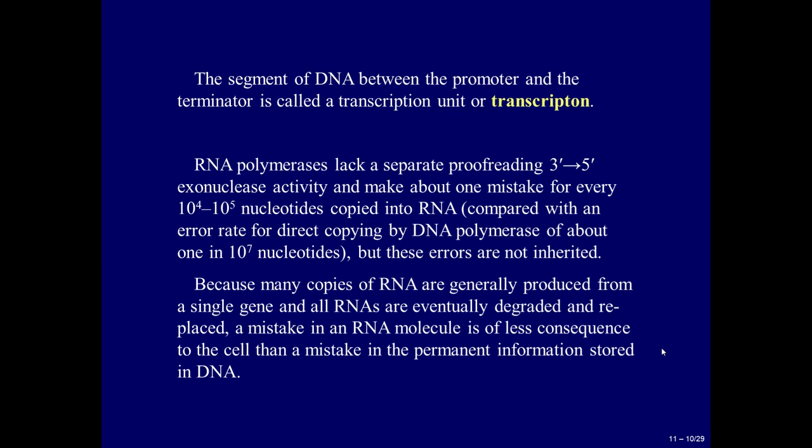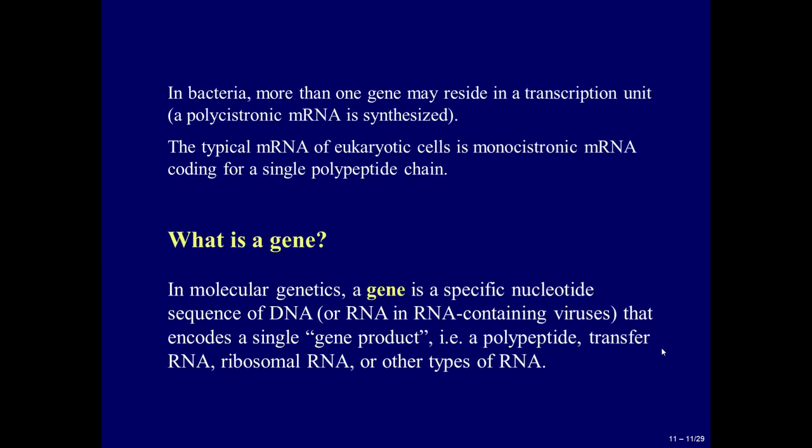But these errors are not inherited. Because many copies of RNA are generally produced from a single gene, and all RNAs are eventually degraded and replaced, a mistake in an RNA molecule is of less consequence to the cell than a mistake in the permanent information stored in DNA. In bacteria, more than one gene may reside in a transcription unit and a polycistronic mRNA is synthesized.